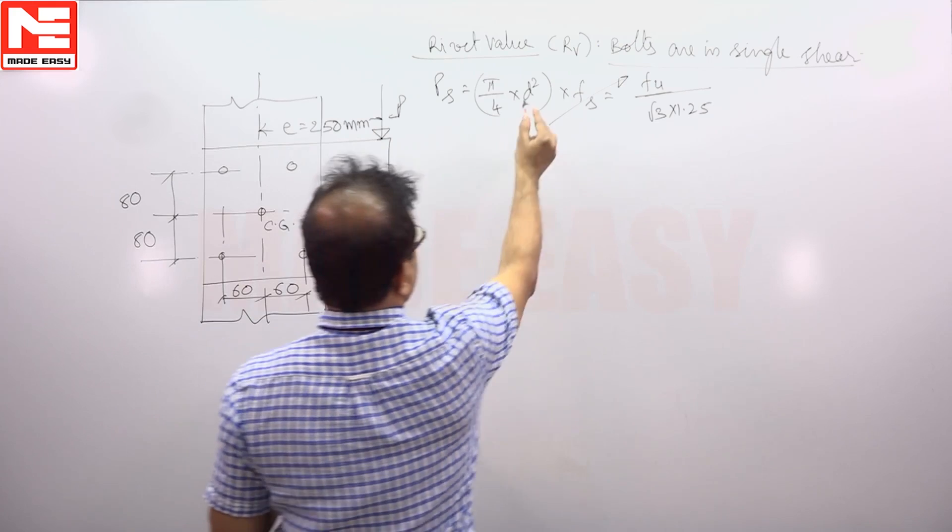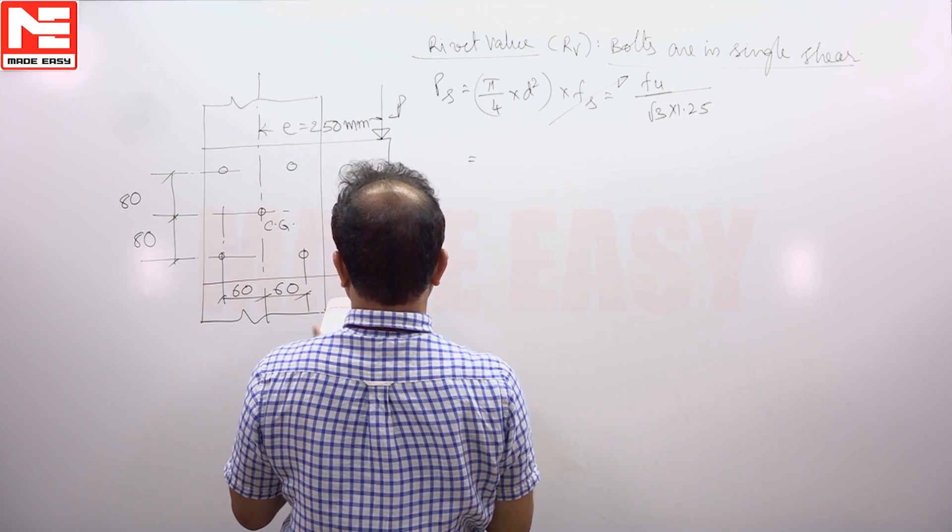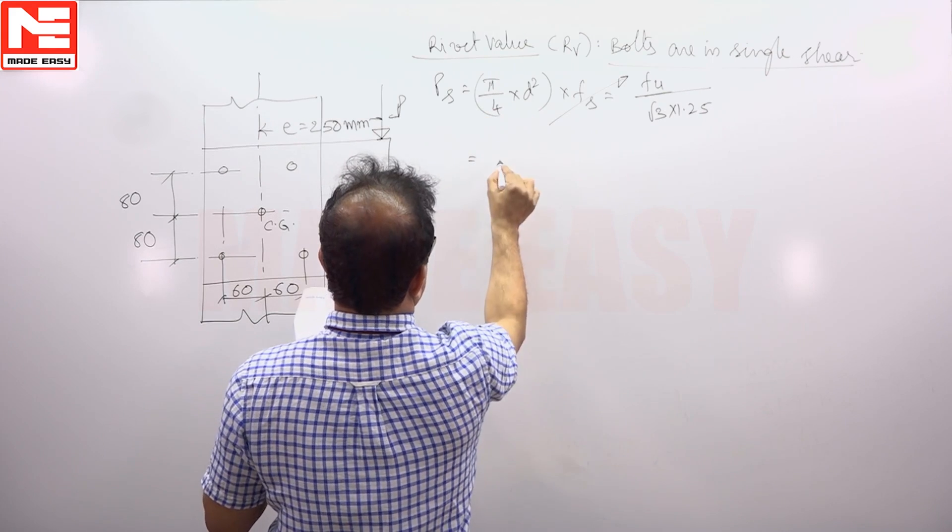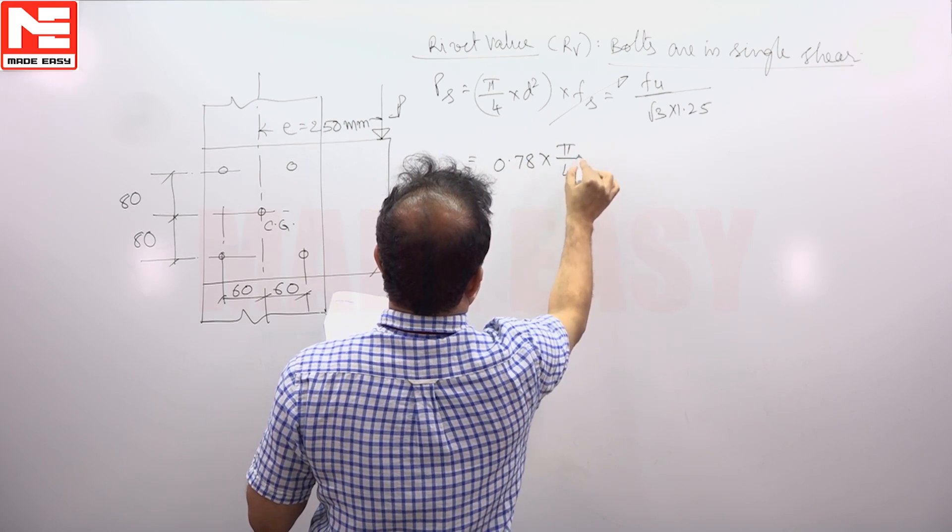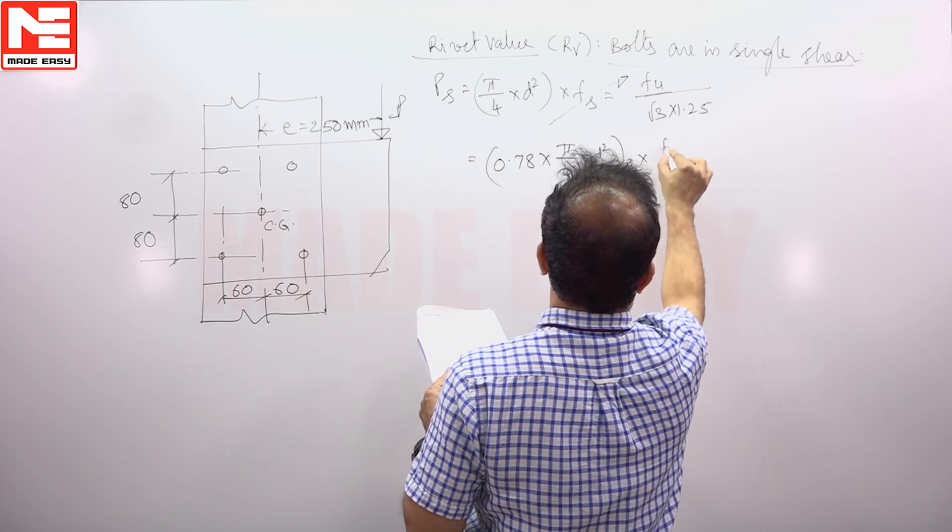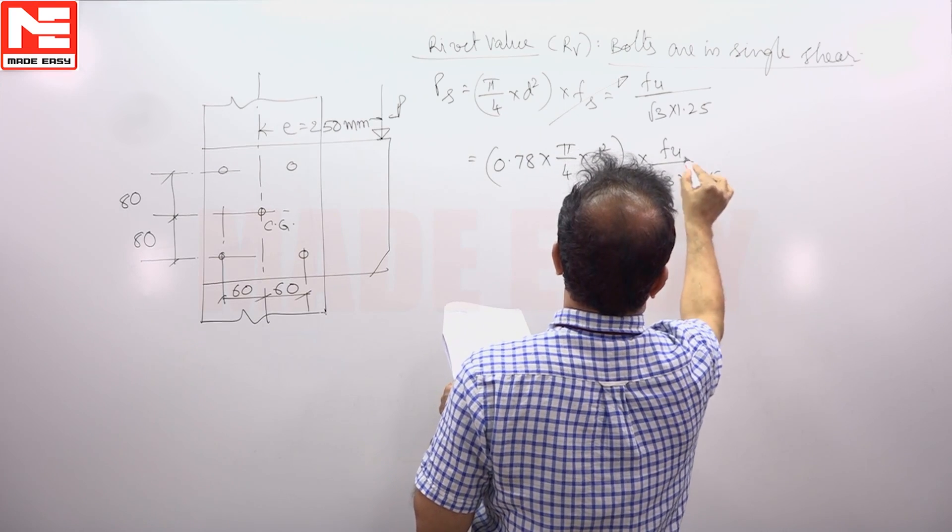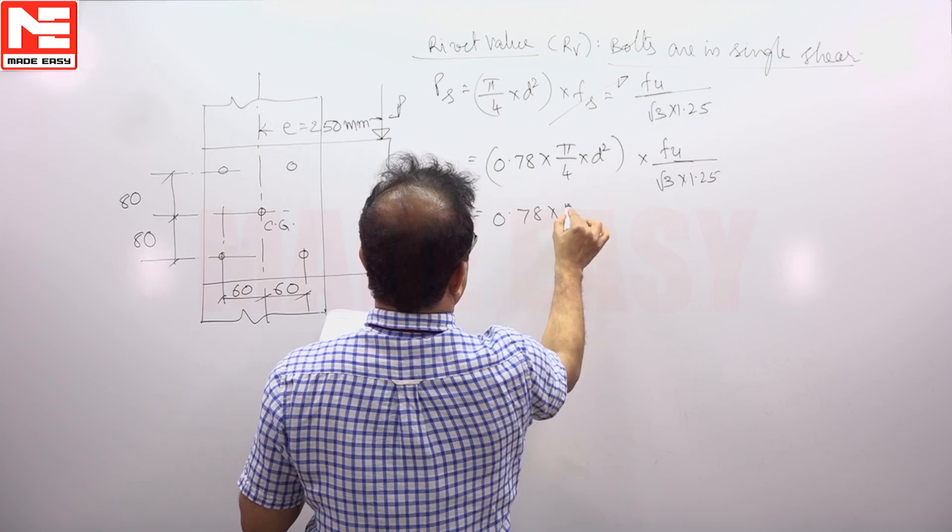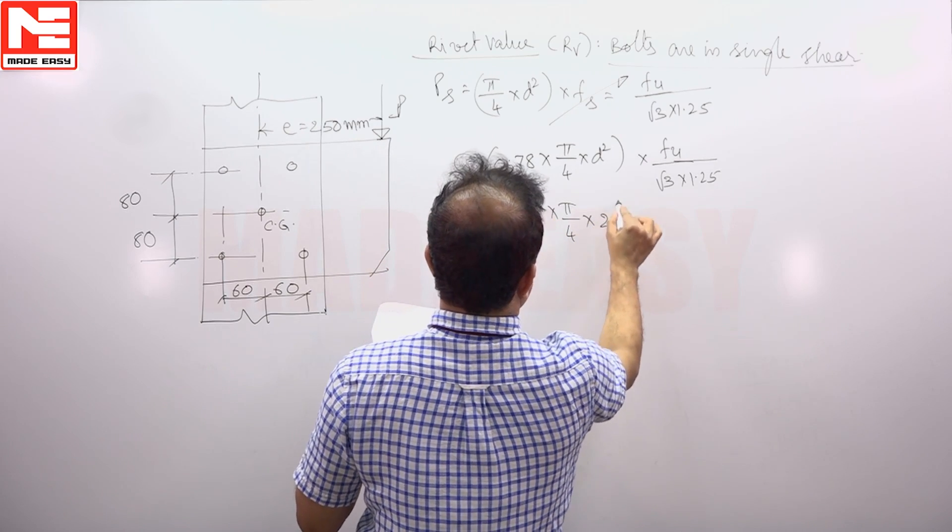Now if the question mentions 0.78D², you have to take 0.78 × π/4 × D² × Fu/(√3 × 1.25). So 0.78 × π/4 × D² gives 20².